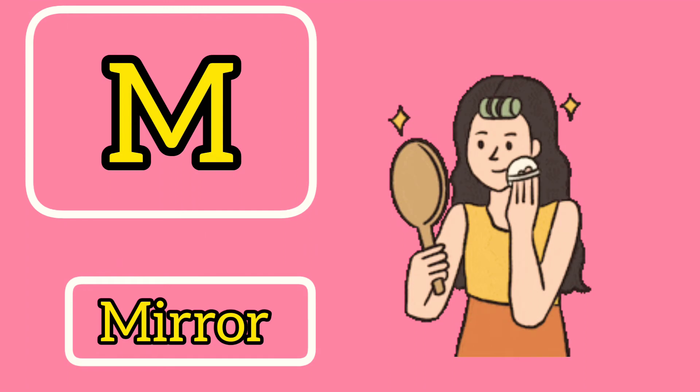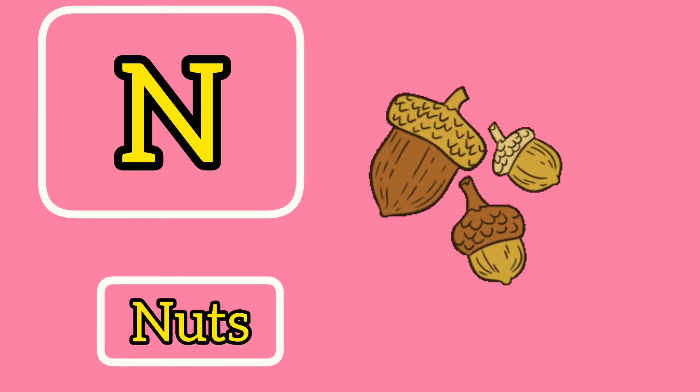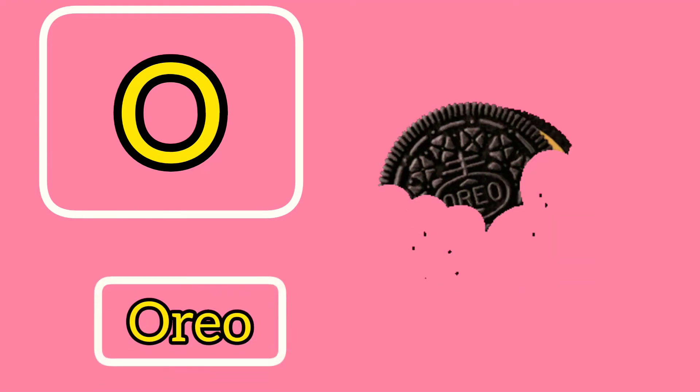M is for Mirror. N is for Nuts. O is for Oreo.